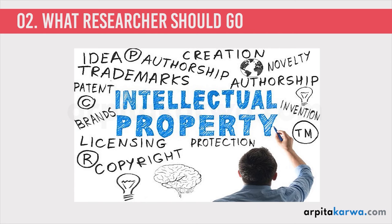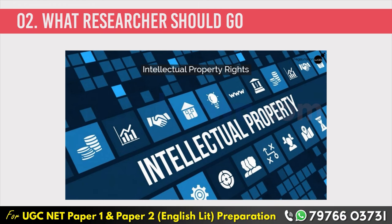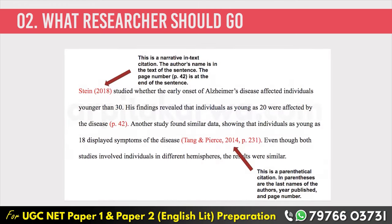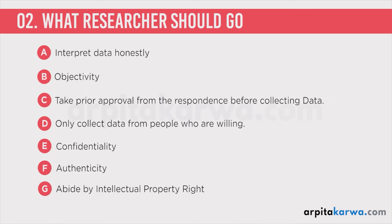We all have this habit of copying data from one source and writing it down as our own. A lot of researchers have this habit — they take an idea or a quotation from a particular book and write it down as if it is their own. Whenever you are citing anything, whenever you are taking reference from any book, quoting or paraphrasing their lines, you should cite the name of the book and the name of the writer in the format discussed in the citation video lecture.